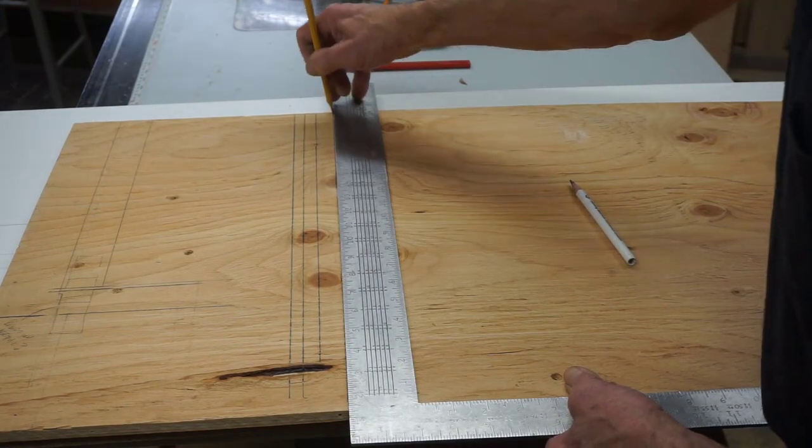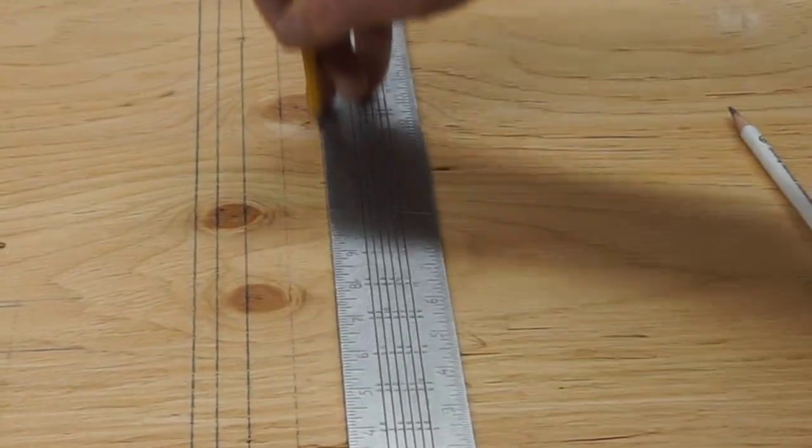Well, for me, the answer is simple. Rectangular lead draws better lines on wood.